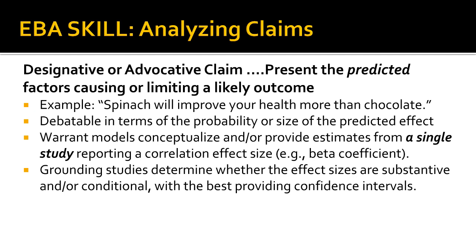Designative claims are evaluated primarily by grounding studies. By examining a series of inferential studies, we can determine how substantive or conditional are the predicted effects. Our objective is to determine how confident we can be that the warrant model is accurately depicting the likely effects of the factors shown. The best evidence will provide confidence intervals, which show the range of possible effects we can expect with 90% or 95% confidence — the level of confidence you should have to be an effective and decisive decision maker.